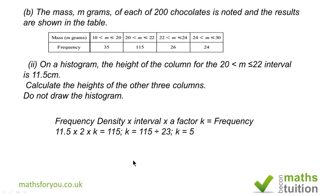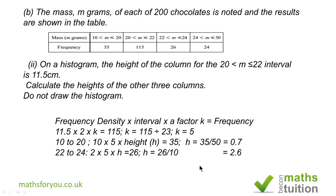For the 10 to 20, the interval width is 10 and the k value is 5. We need to find the height. So if we divide 35, which is the frequency for that interval, by 50, gives us a height of 0.7. For 22 to 24, we have a height of 2.6, and for 24 to 30, after the calculation, h will be 24 divided by 30, and that gives us 0.8.